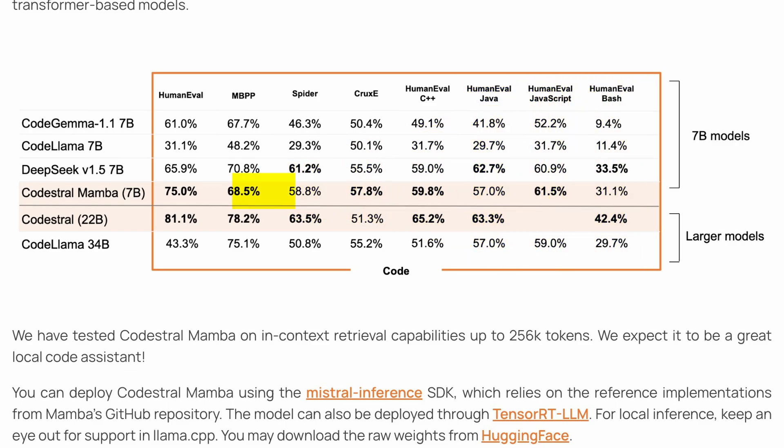Also, I don't understand why they have made the MBPP score bold when it doesn't beat DeepSeek in this benchmark. Overall, it's pretty cool in benchmarks.